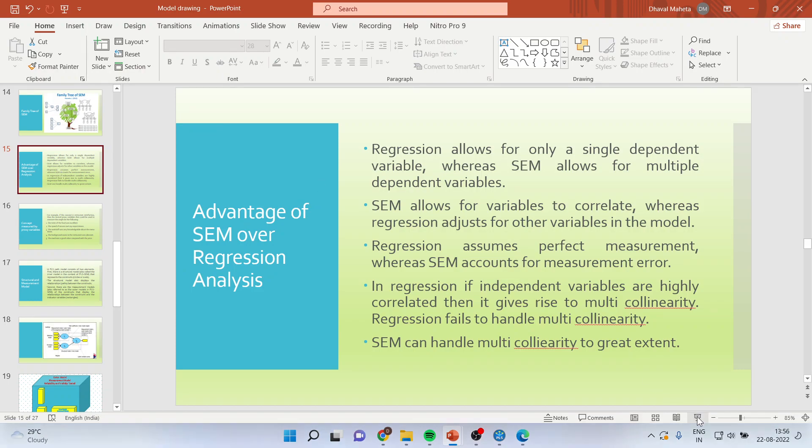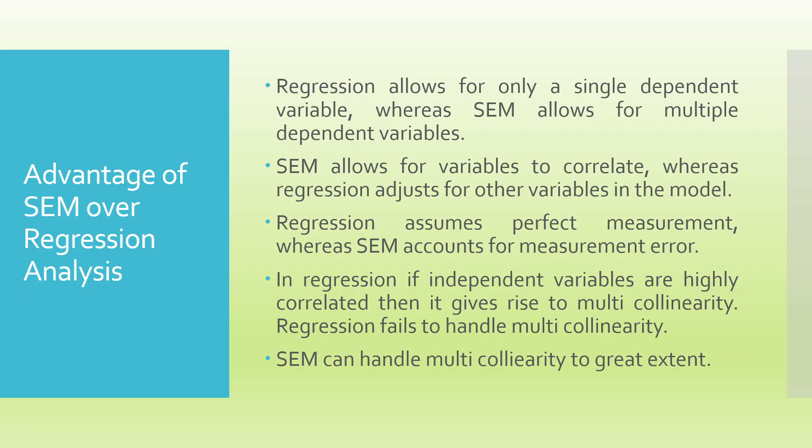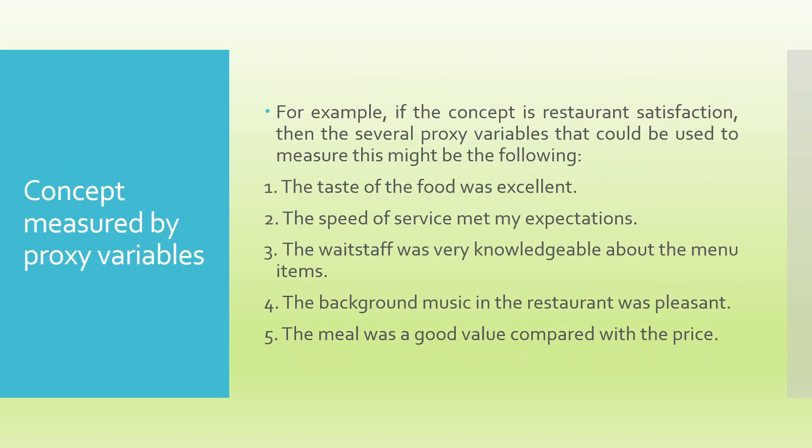Now, what are the advantages of SEM over regression analysis? Regression can only work on a single dependent variable, whereas SEM allows for multiple dependent variables. SEM allows for variables to correlate. Correlation is possible in structural equation modeling, but in regression analysis, it is not possible. Regression assumes perfect measurement, whereas SEM accounts for measurement error. You cannot handle the variables if they have high multicollinearity among them, but if you run the same analysis in structural equation modeling, it can handle multicollinearity very well.